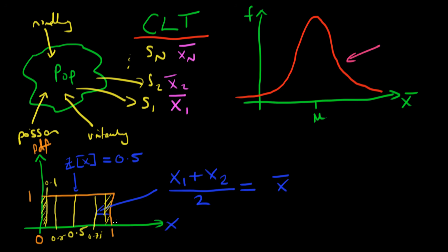Similarly, there are fewer ways to get a value of x-bar which is really high. If we get a value of x-bar equal to 0.9, that means both observations have to be between 0.8 and 1, because if they weren't, x-bar would be less than 0.9. So there are far fewer ways to get extreme values of x-bar than there are ways to get x-bar close to 0.5. And if you take arbitrarily many samples and calculate the sample mean each time, they would actually be normally distributed around 0.5. The normal distribution captures the relative likelihood of getting 0.5 versus 0.1 or 0.9.